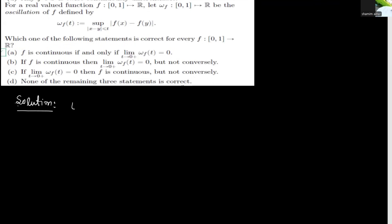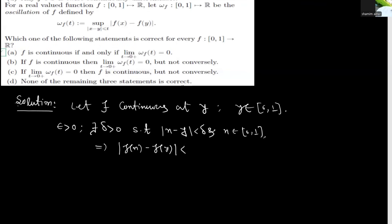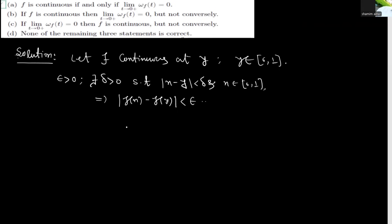First, let f be continuous at y, where y belongs to the closed interval [0,1]. By the definition of continuity, given any ε > 0 there exists δ > 0 such that |x − y| < δ and x belonging to [0,1] implies |f(x) − f(y)| < ε. This is equation number one.